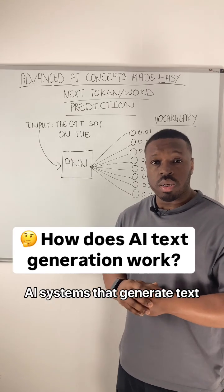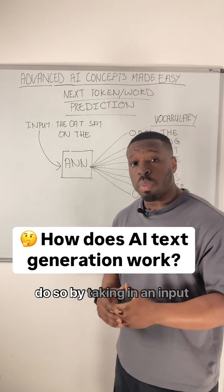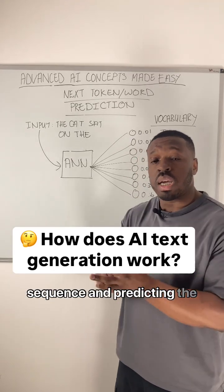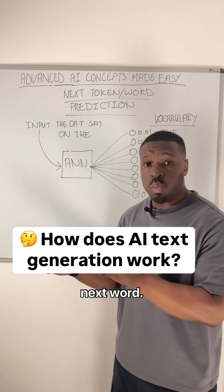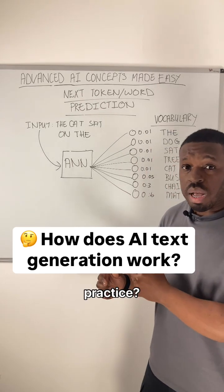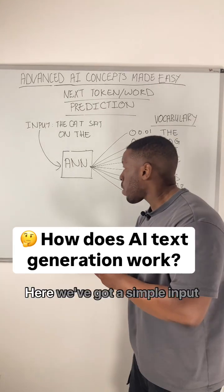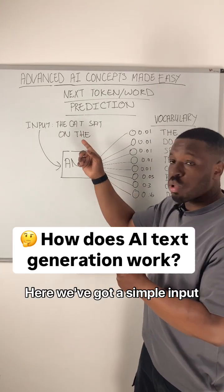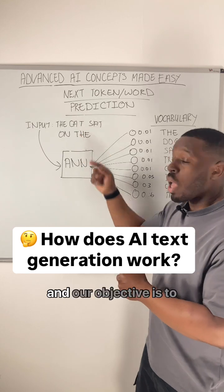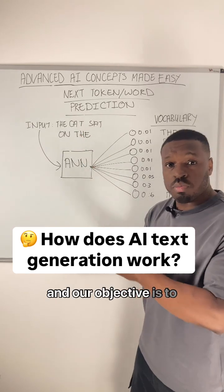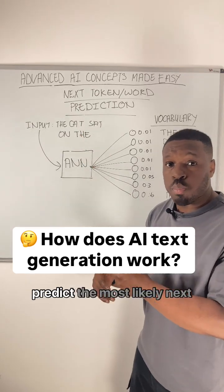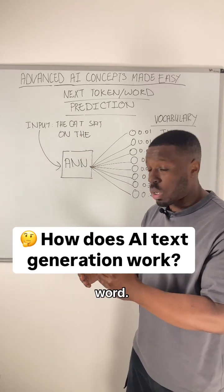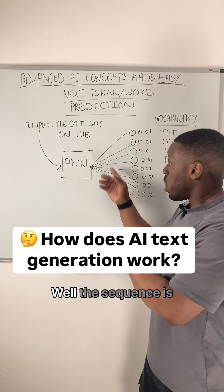AI systems that generate text do so by taking in an input sequence and predicting the next word. How does that work in practice? Here we've got a simple input sequence — 'the cat sat on the' — and our objective is to predict the most likely next word. So how would that work?